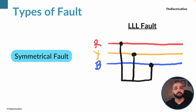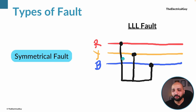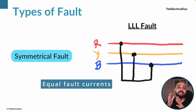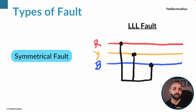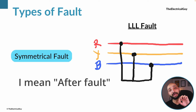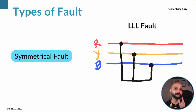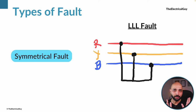The first symmetrical fault is the triple line fault — also called L-L-L fault. In this fault, all three phases are connected to each other, and the fault current flowing through the system is equal in every phase. Before the fault the system was balanced, and during the fault the system remains balanced because equal fault current flows through all three phases — hence it is called a symmetrical fault.